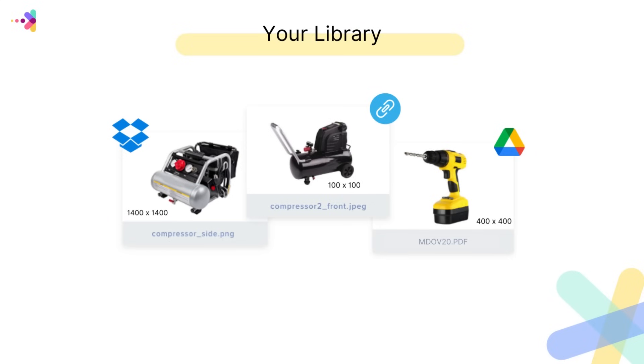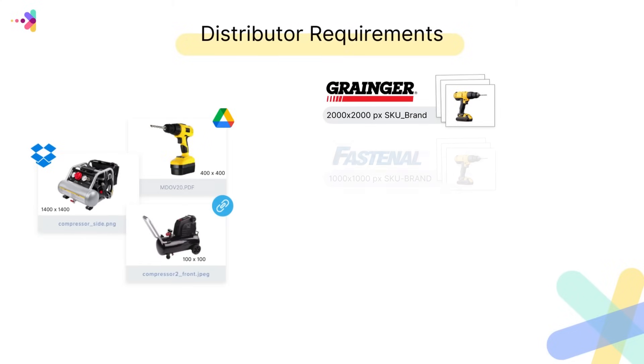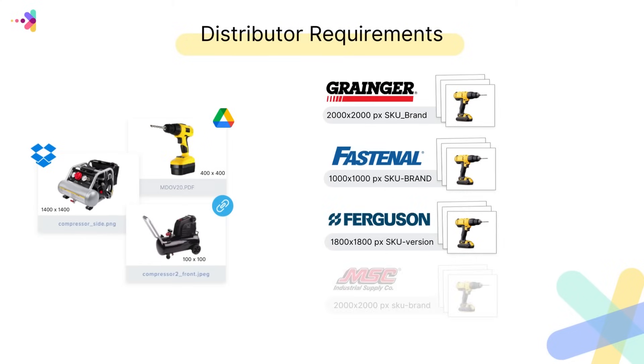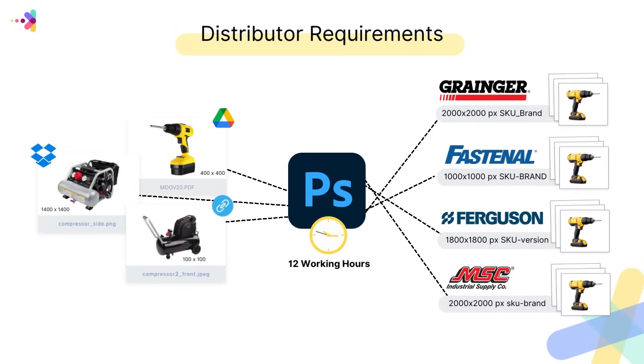Next, you have external image requests from distributors and partners. These types of requests can be more difficult to fulfill depending on who the request is from. Sometimes there's a need to resize and rename images to meet distributor requirements. Each distributor may have specific size and format preferences, leading to a tedious and manual process of resizing and renaming images in Photoshop. This process can be very error-prone and time-intensive.